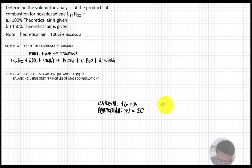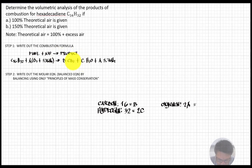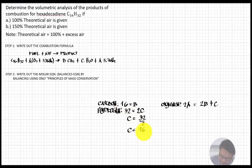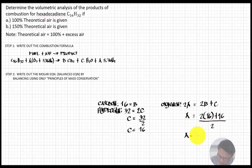For oxygen: on the air side we have 2A, and it equals 2B plus C on the product side. We already have B equals 16 and C equals 16. Substituting to get A: 2A equals 2 times 16 plus 16, so 2A equals 48, giving A equals 24.